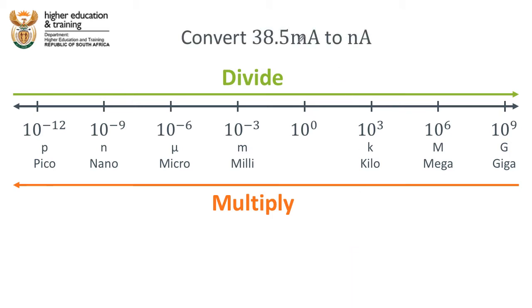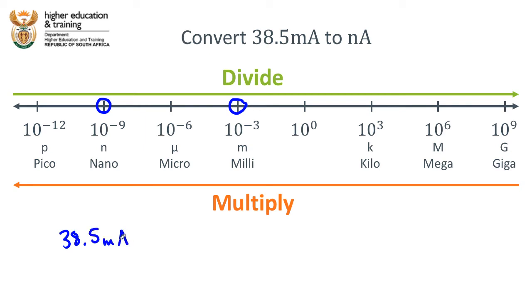The next example is to convert 38.5 milliamps to nanoamps. We are going from the milli part of the number line to the nano part of the number line, so we are moving from a bigger unit down to a smaller unit — moving in the multiply direction. The difference between the exponent values: nano is negative nine and milli is negative three, so the difference in the exponent values is six.